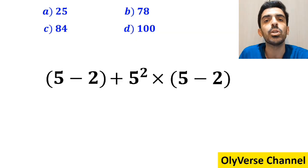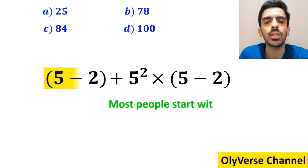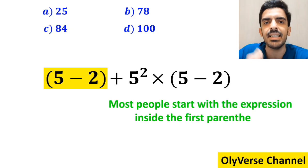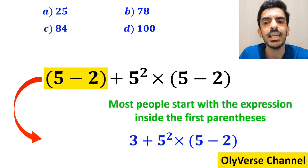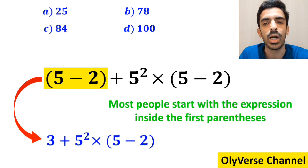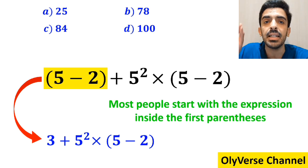For the first step to solve this question, most people start with the expression in the first parentheses. They simplify this expression to 3 + 5² × (5 - 2).